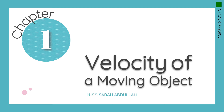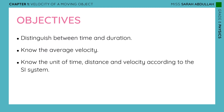We will start with chapter 1, titled Velocity of a Moving Object. The objectives we're going to cover during this week's lecture are: you'll be able to distinguish between time and duration, you will know the average velocity and how to calculate it, and you'll know the units of time, distance, and velocity according to the SI system.